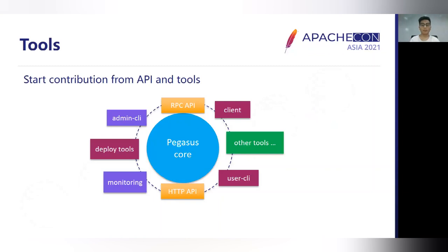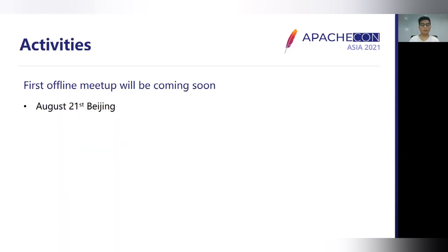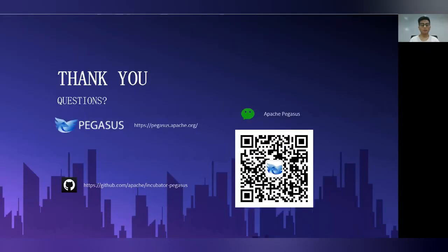Community activity is a key focus for us. To encourage people to join and build the community, we recommend contributors start with key development areas, including enhancements such as client and storage improvements. In the future, we will enhance the stability of existing features such as duplication, backload, hot partition detection, and will provide new features such as fast level balancing and Kubernetes support. We welcome you to pay attention to our Meetup event in Beijing in August, and to follow our GitHub and WeChat public account. Thank you.